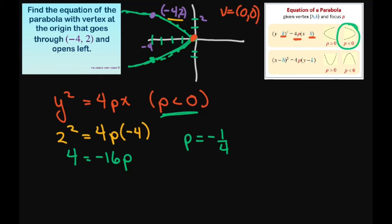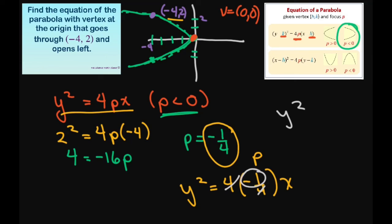Alright, so all you have to do now is substitute in negative 1 fourth into our form. So that's going to be y squared equals 4 times negative 1 fourth times x because that was our p. And this is going to give you y squared. This is just going to equal negative 1. So that just equals negative x. And that's it.